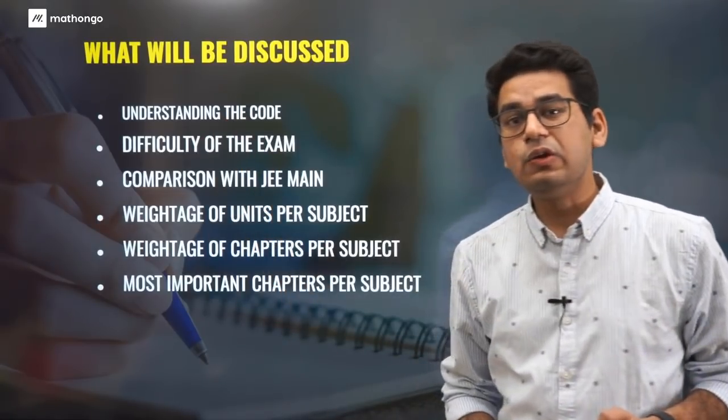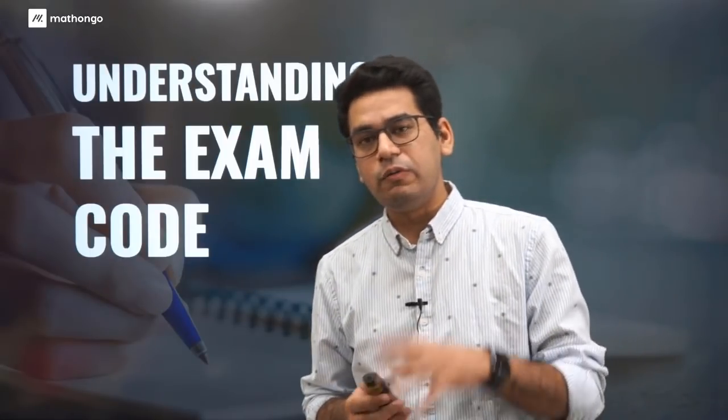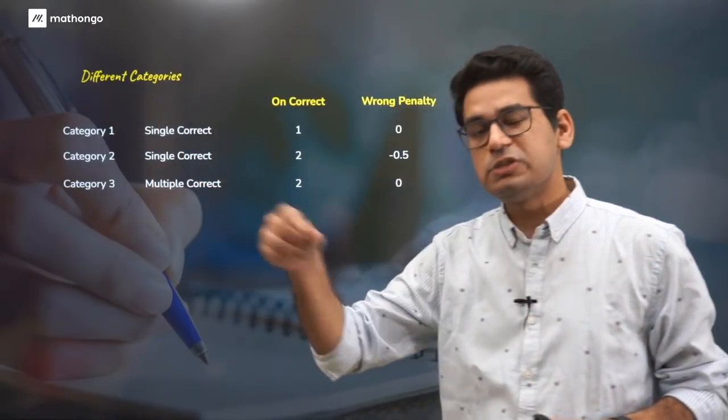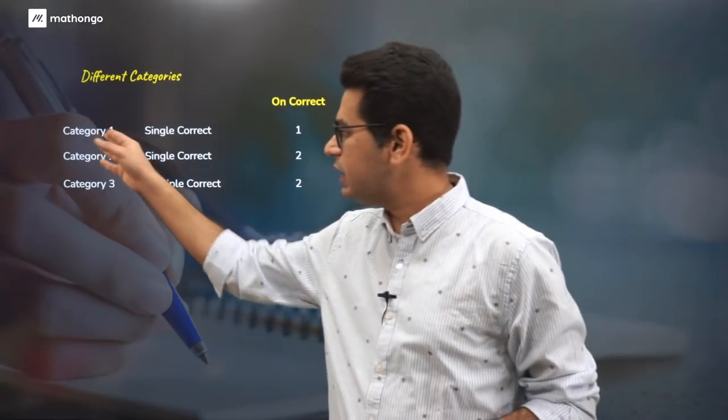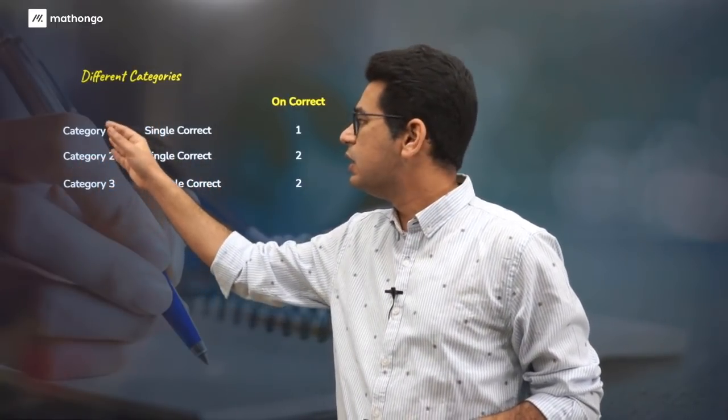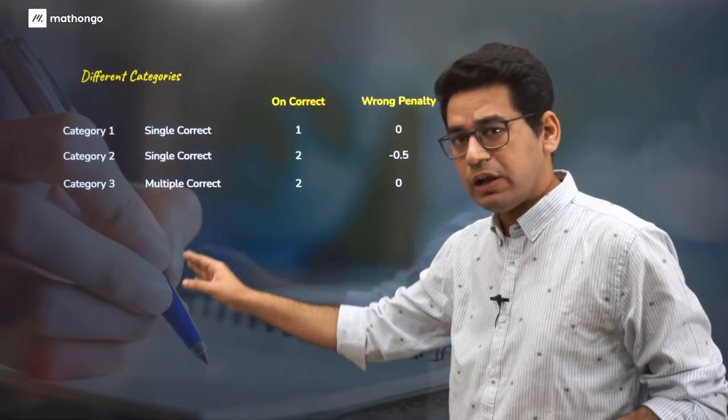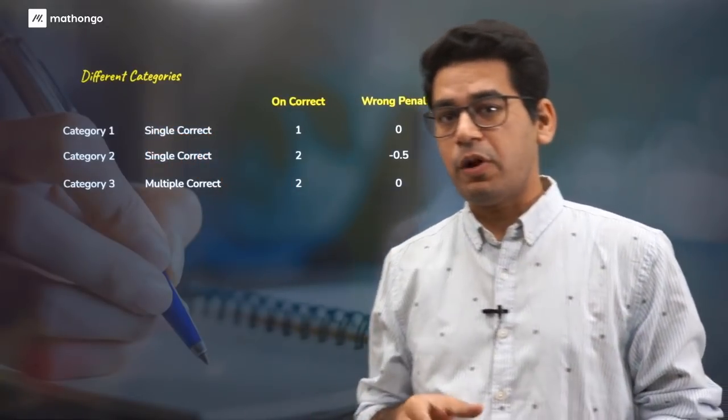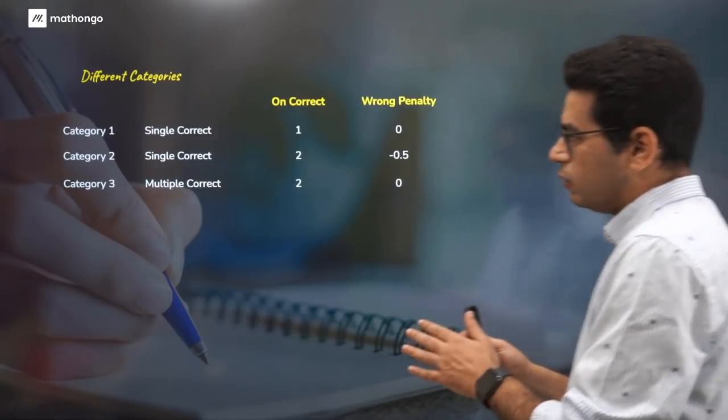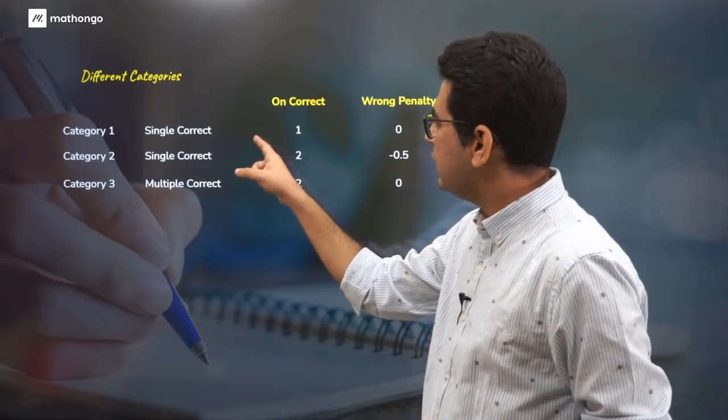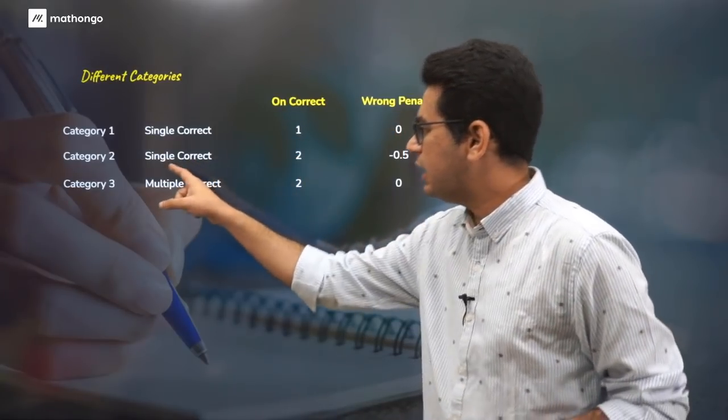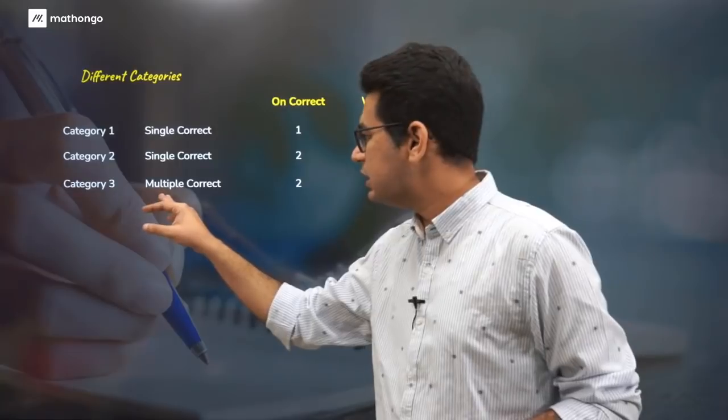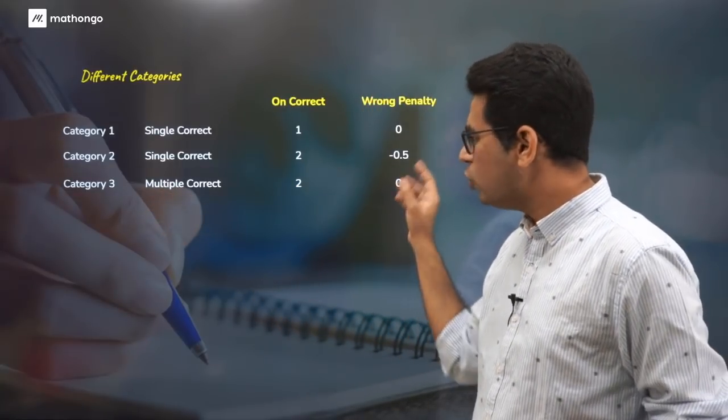So let's start with understanding the exam code first. I'm sure a lot of you would be knowing this, but quickly let's summarize. There are different categories of questions per subject that come in. Every subject will have three category questions. For the last five years this has been the trend: Category 1, Category 2, Category 3, single correct. They are all MCQ based questions with options A, B, C, D.